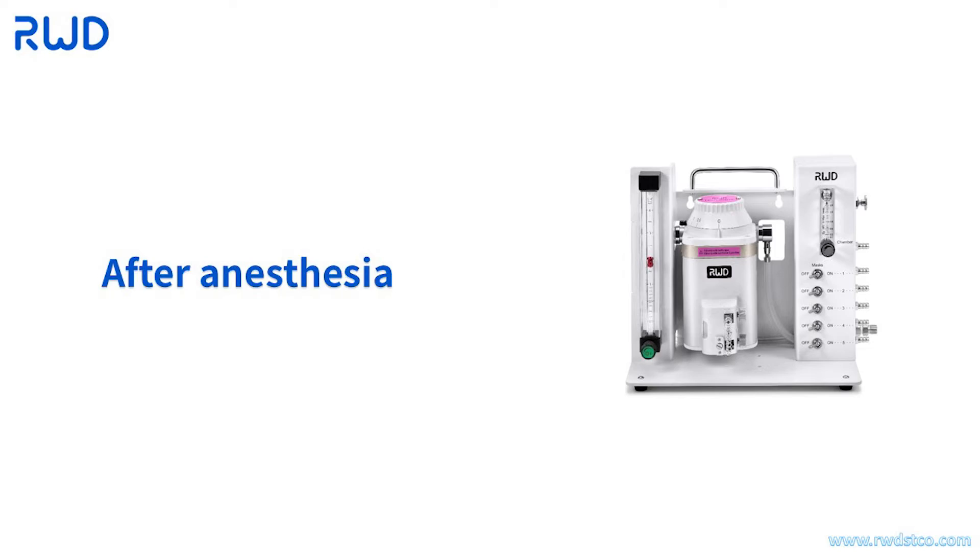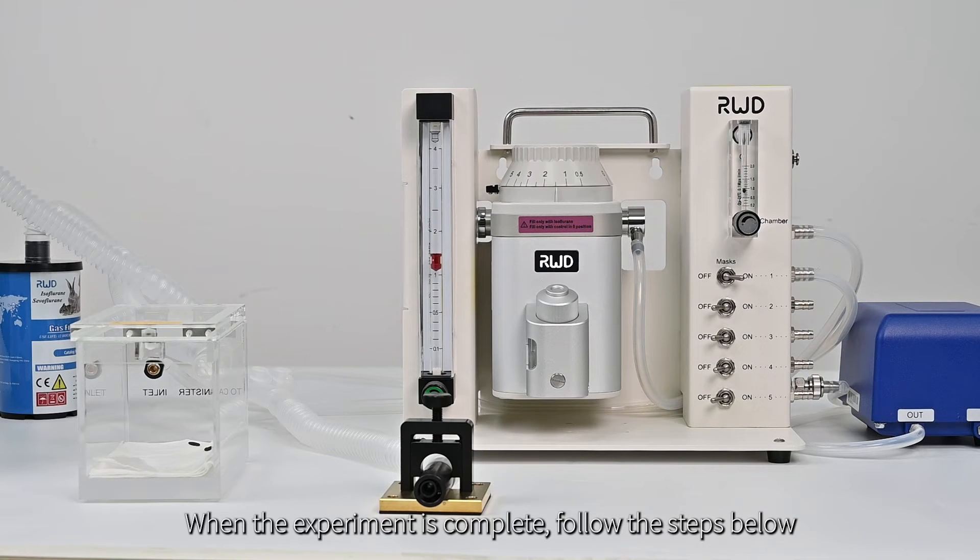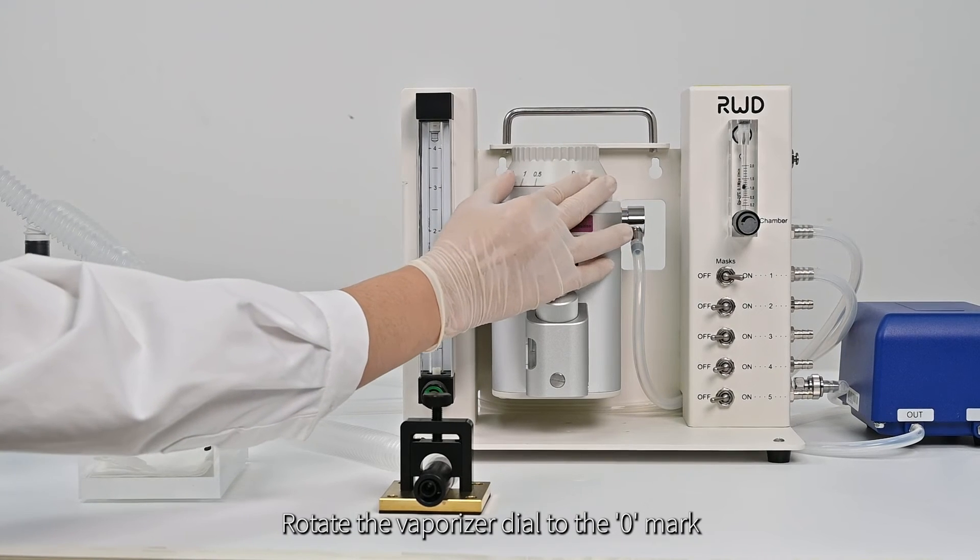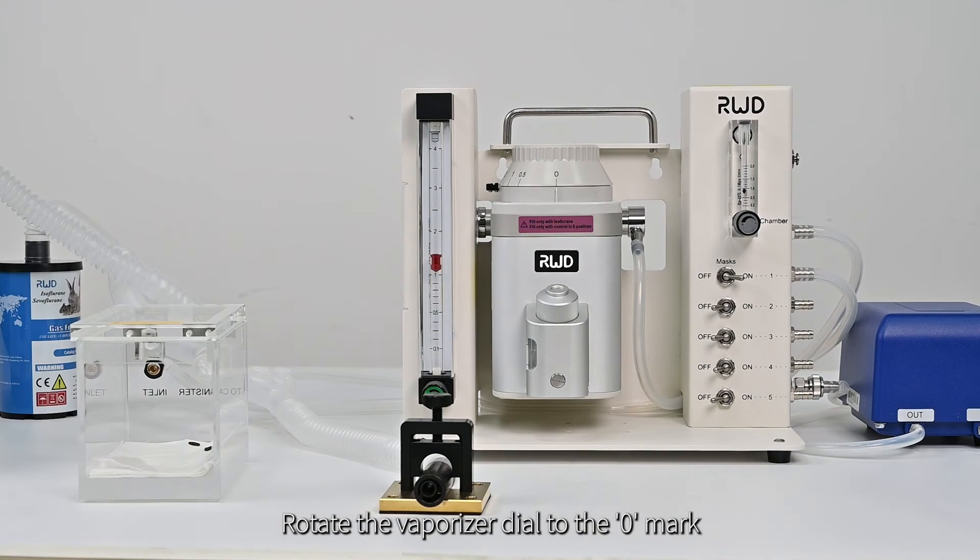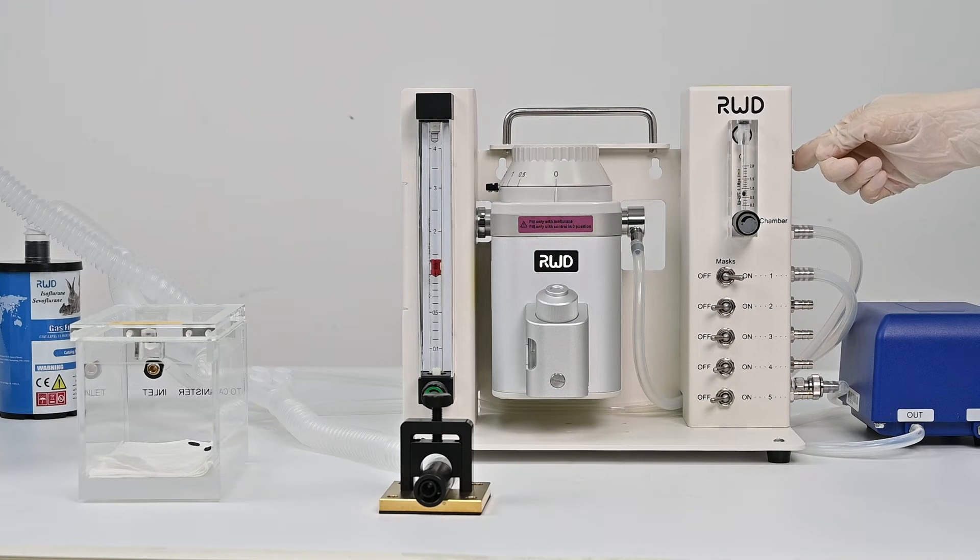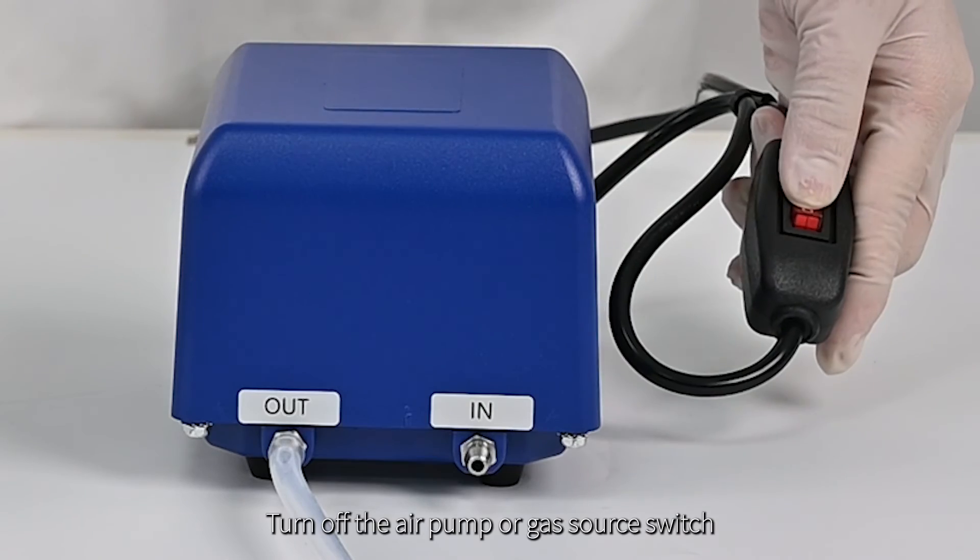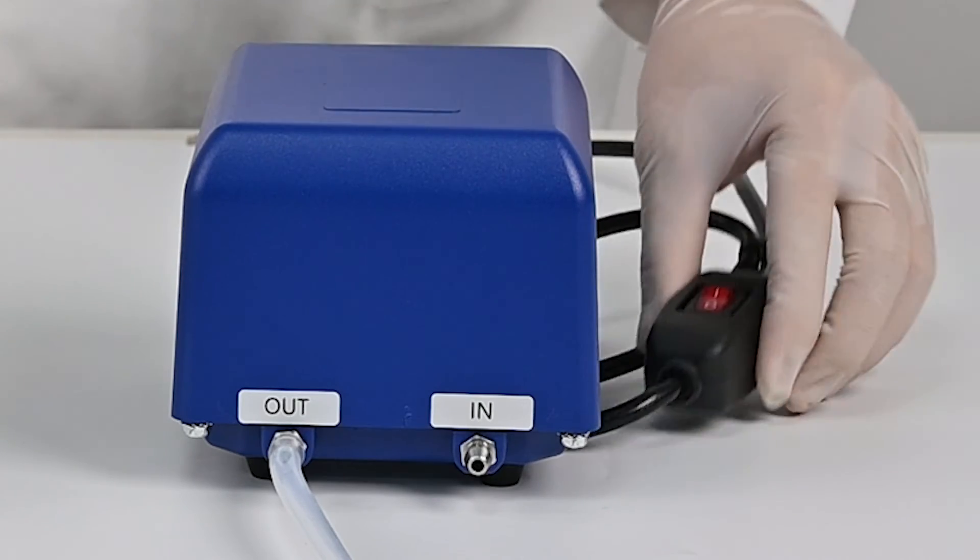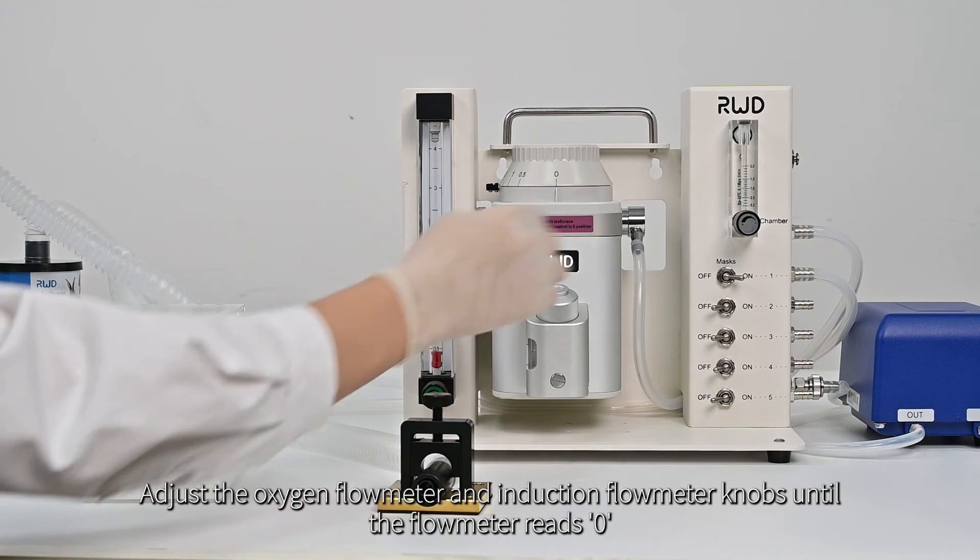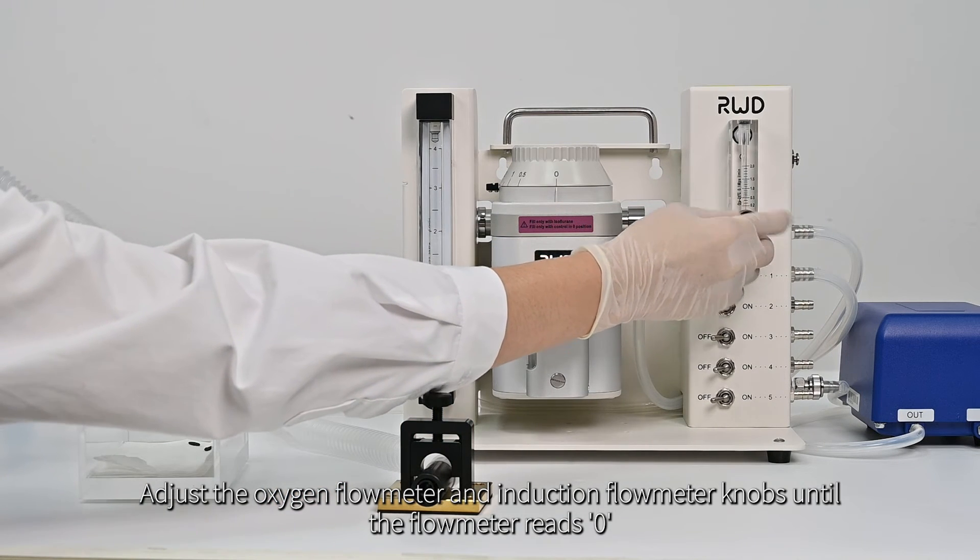After anesthesia, when the experiment is complete, follow the steps below. Rotate the vaporizer dial to the zero mark. Press the O2 flush button to dilute the anesthetic gas in the induction chamber. Turn off the air pump or gas source switch. Adjust the oxygen flow meter and induction flow meter knobs until the flow meter reads zero.